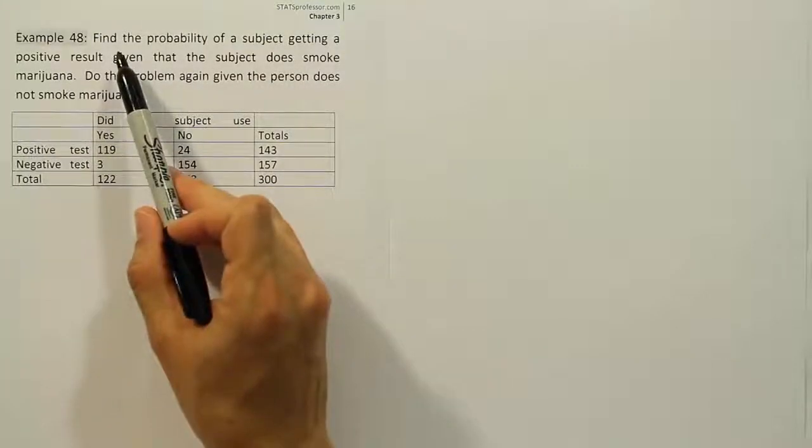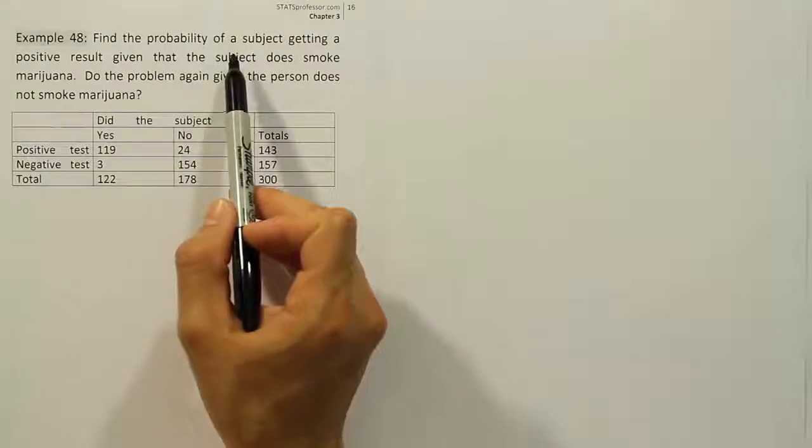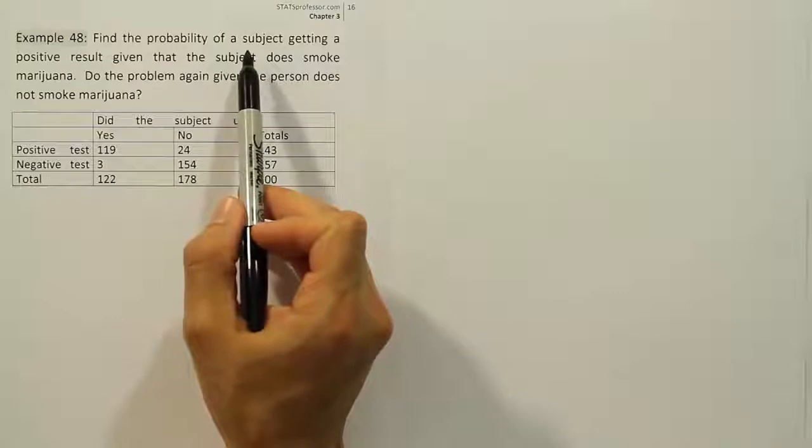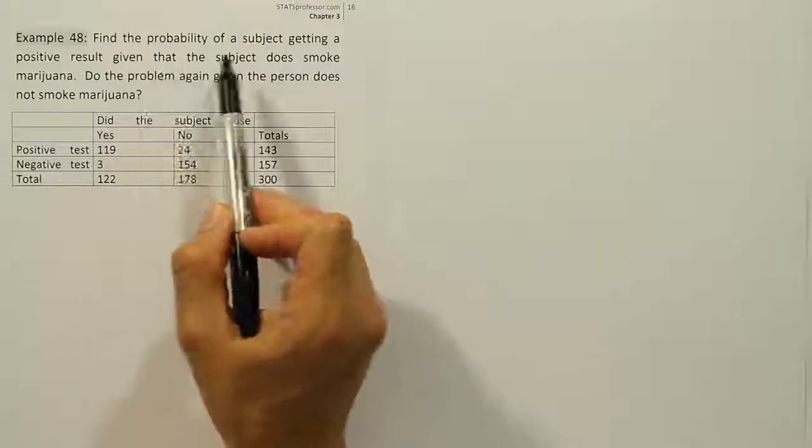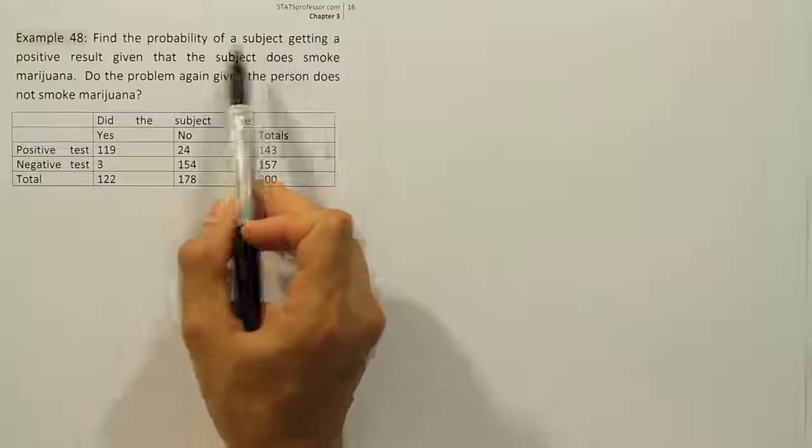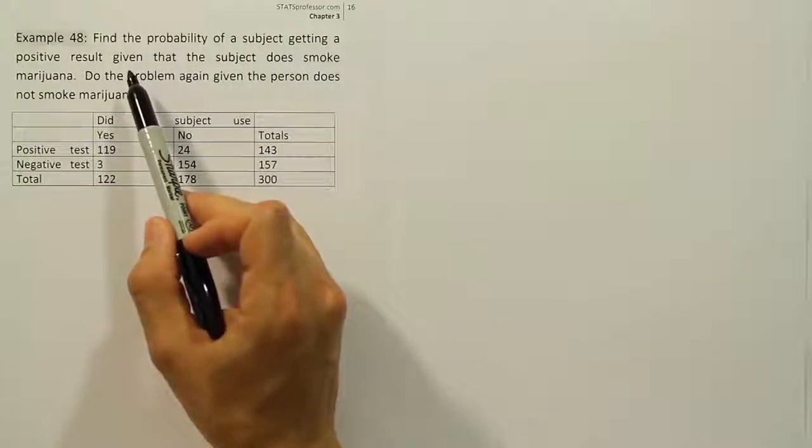So when I read this first question here, I see that it's a probability question, that's obvious. I also see they're only taking one subject. And then finally we have the phrase 'given that.' That phrase, along with the fact that we're only taking one subject and we're asked to find the probability, tells me this is the conditional rule for probability.